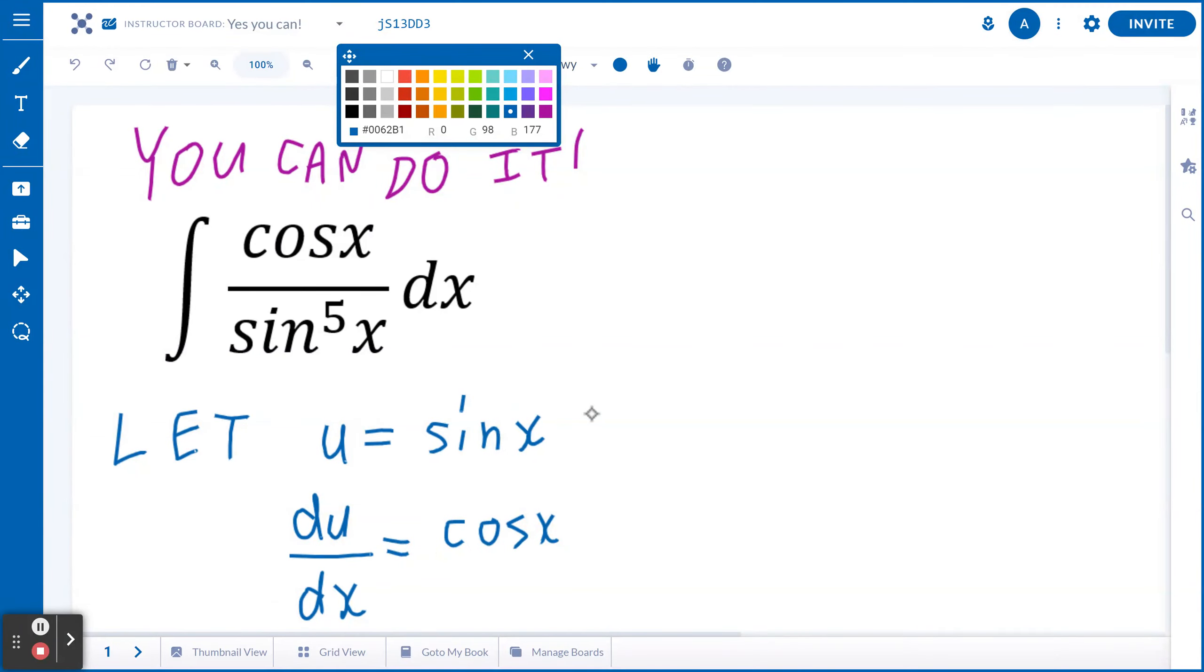Now, if you want to break this down a little bit more, you will discover that du equals to cosine x times dx.